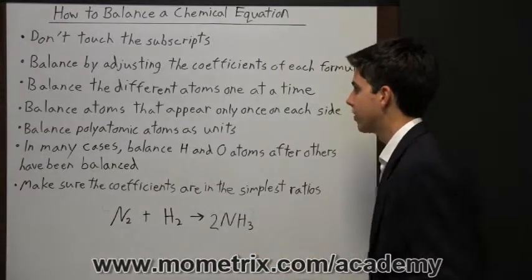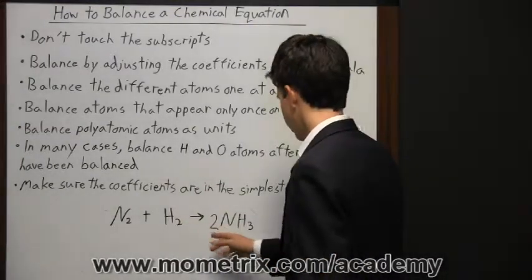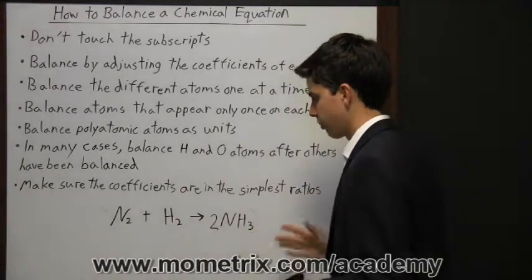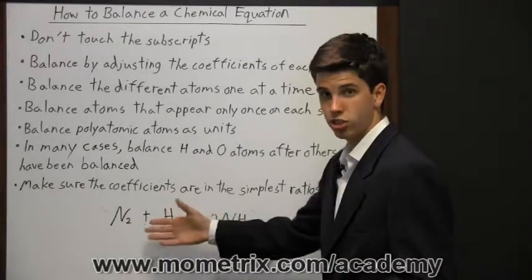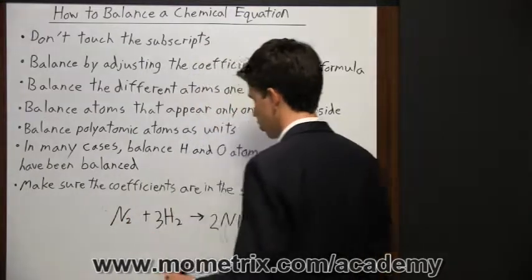So now that we have balanced one atom, then we can move on to the next, which is hydrogen. So with the coefficient of two and the subscript of three, there's six hydrogen atoms on the product side. So we need to get six total on the left side here, so we're going to do that by adding a coefficient of three.